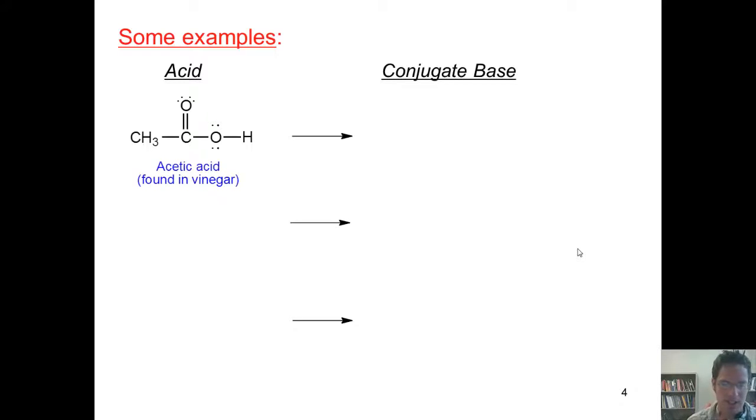So let's take a look at some amazing examples. This molecule, which is called acetic acid, is found in vinegar. When it loses a proton, the acidic proton being this one right here, it forms this product, which is called acetate.